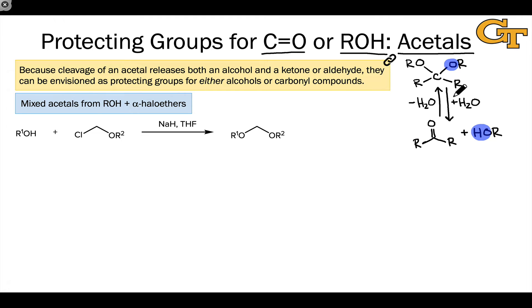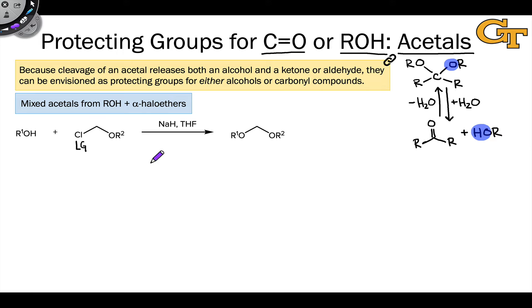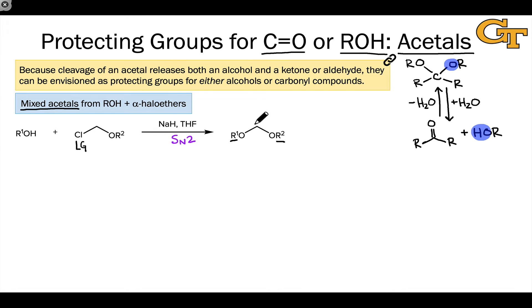Very commonly, our way to set up an acetal, if we're interested in the alcohol, is not quite this carbonyl-type approach. We often use something that kind of looks like an acetal to start with — an alpha halo ether with a good leaving group, say chloride, attached to a carbon that also bears an oxygen. We use strong base to deprotonate the hydroxyl group, and there's a nucleophilic substitution process — an SN2 reaction — to generate the acetal. The result is called a mixed acetal because we have two different R groups linked to the two oxygens.